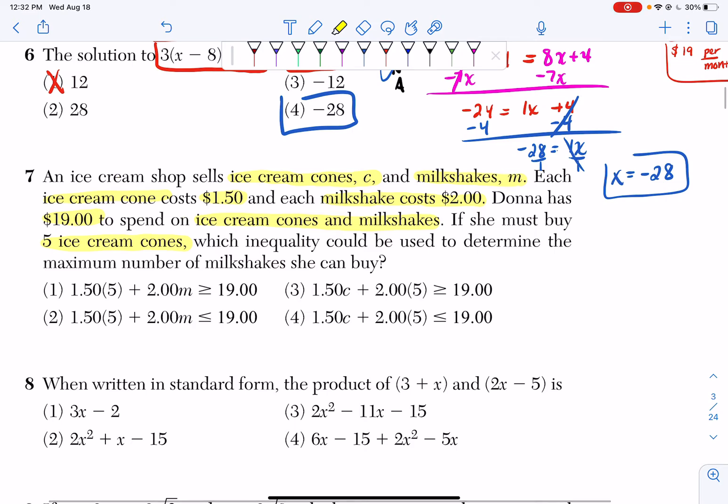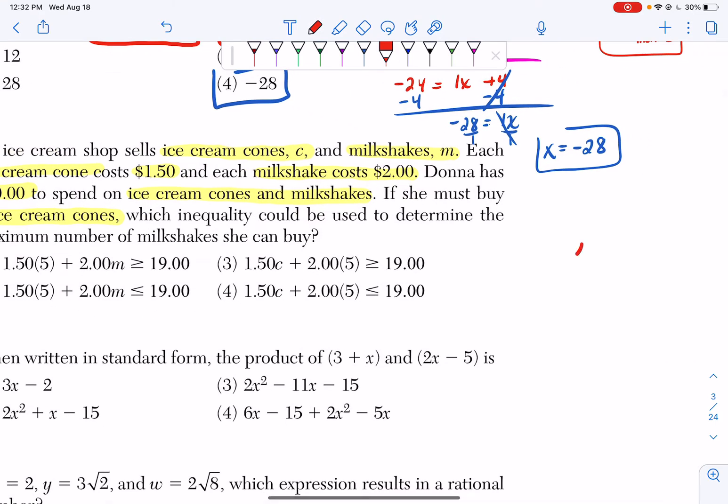So she has $19 that she can spend. She can only spend up to $19. She can't spend $20, she can't spend $21, she can't spend $22. She can only spend up to $19. So whenever I'm going to spend up to $19, I'm going to have a less than or equal sign.